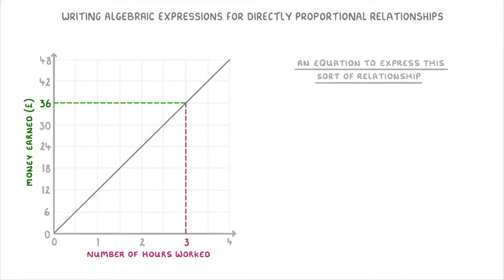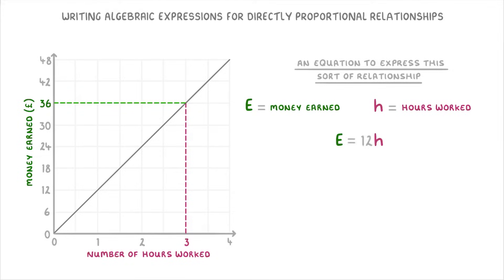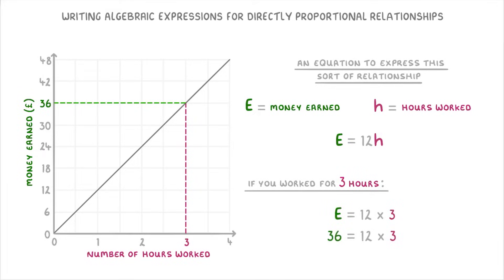So for this example, if we were to say that E is the money earned and H is equal to the hours worked, then the equation that describes the relationship between money earned and hours worked would be E equals 12H. So if you worked for 3 hours, E would equal 12 times 3, which is 36. So you'd have earned 36 pounds for those 3 hours.